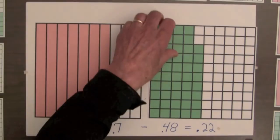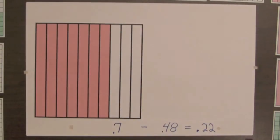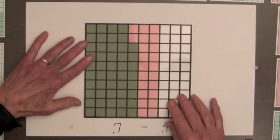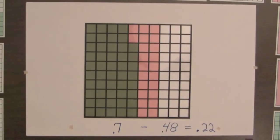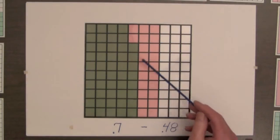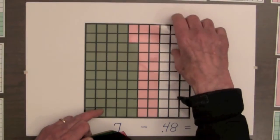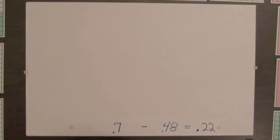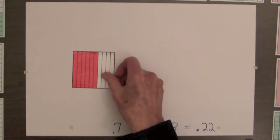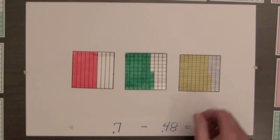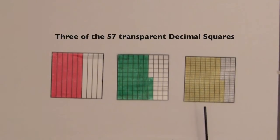Another way to show the difference in these two shaded amounts is to overlap transparencies. We place the transparency for forty-eight hundredths on top of the seven tenths square, and we can see that the difference is twenty-two hundredths of a square. In the decimal squares materials, there is a transparent square for each decimal square, and these are homemade transparent decimal squares that can be easily made.